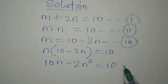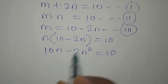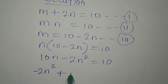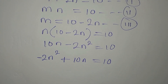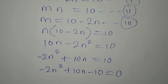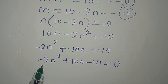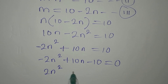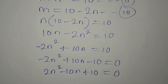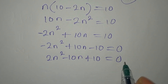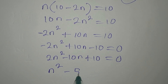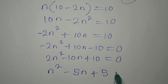Let's open the bracket, so we have 10N minus 2N squared equals 10. We rearrange to get minus 2N squared plus 10N minus 10 equals 0. Multiplying both sides by minus 1 gives 2N squared minus 10N plus 10 equals 0. Dividing everything by 2, we get N squared minus 5N plus 5 equals 0.